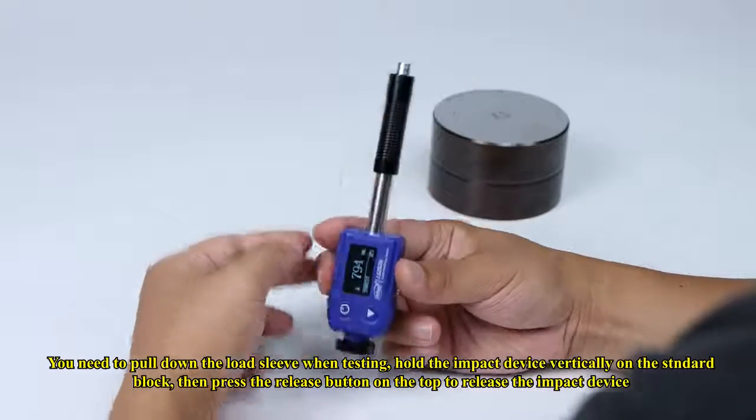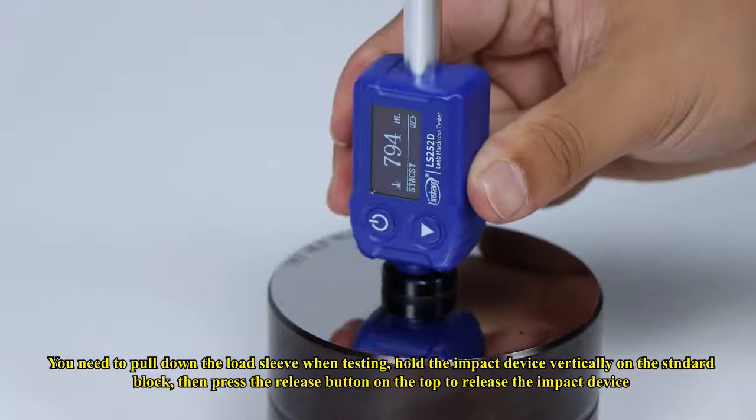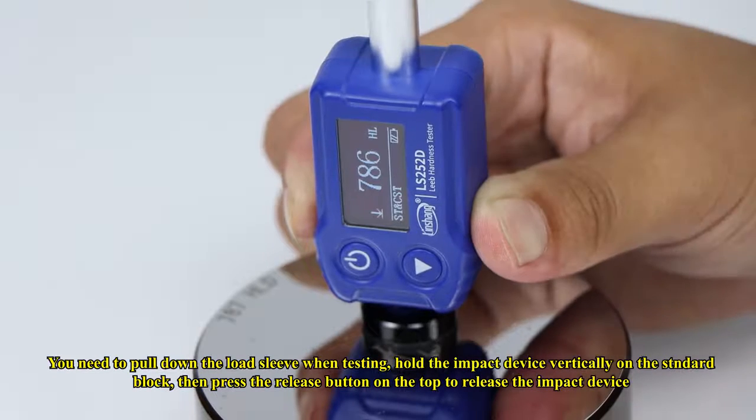You need to pull down the load sleeve when testing, hold the impact device vertically on the standard block, then press the release button on the top to release the impact device.